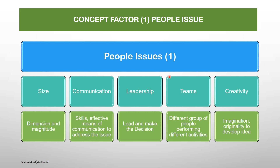People Issues. The first factor — People Issues — the key elements of people comprise five elements: Size, Communication, Leadership, Teams, and Creativity. Size refers to the dimension and magnitude of the people. Communication covers skill and effective means of communication to address issues. Leadership means to lead and make decisions. Teams are different groups of people performing different activities during Process Optimization. Creativity is the imagination and originality to develop ideas when building a block of the optimization process.